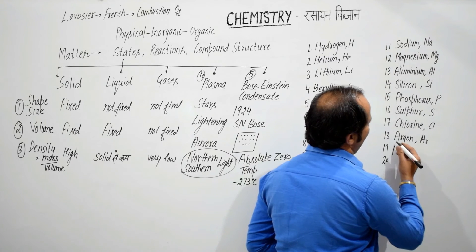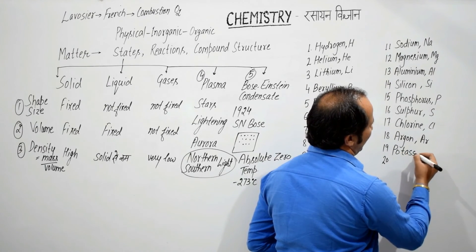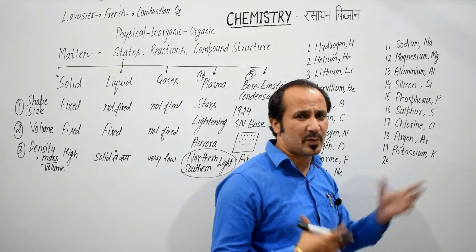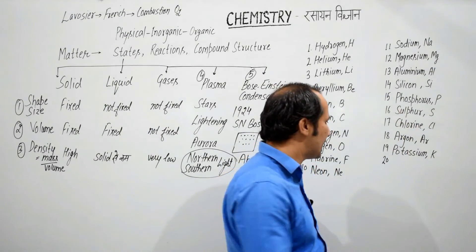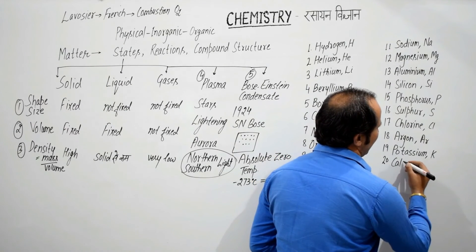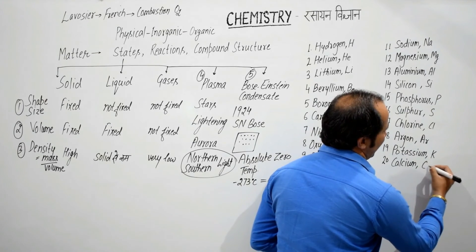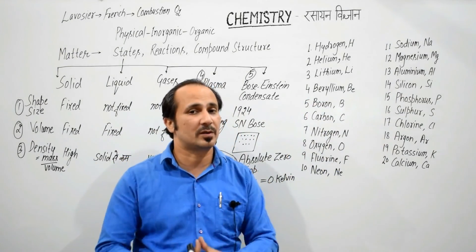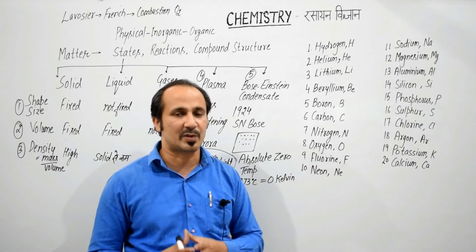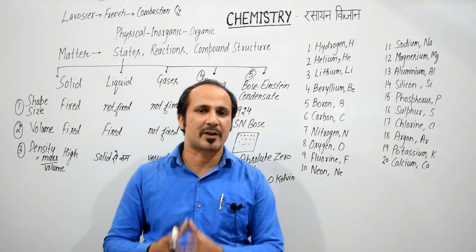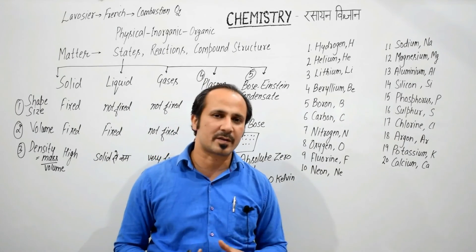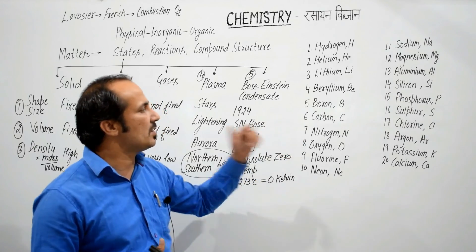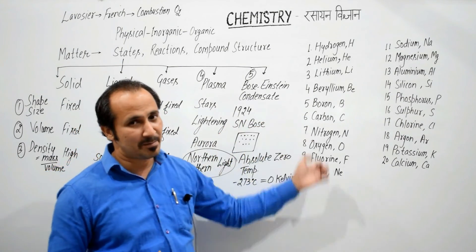19th number — potassium. Again, ये भी important है sodium और potassium — क्योंकि इनके नाम से just opposite हैं इनके letters. Potassium को capital K से note किया जाएगा. And 20th number — calcium, symbol capital C और small A. तो इन सबके atomic number और symbols याद होना बहुत ज़रूरी है. Homework: sodium, magnesium, aluminium, silicon, phosphorus, sulfur, chlorine, argon, potassium, और calcium.